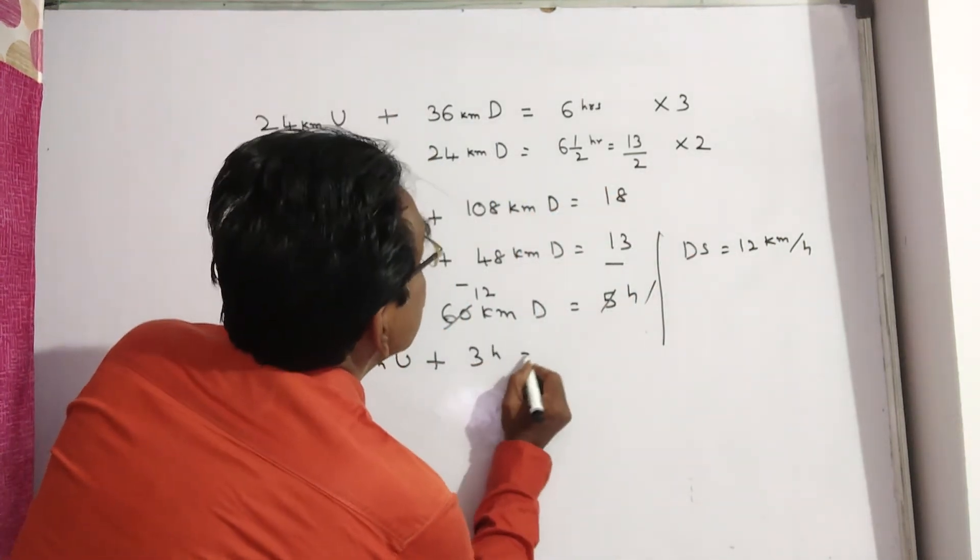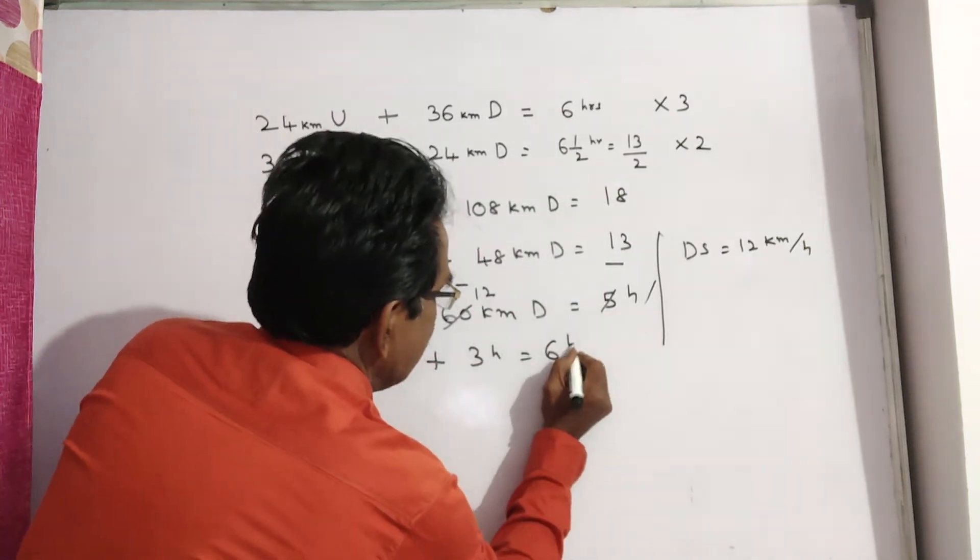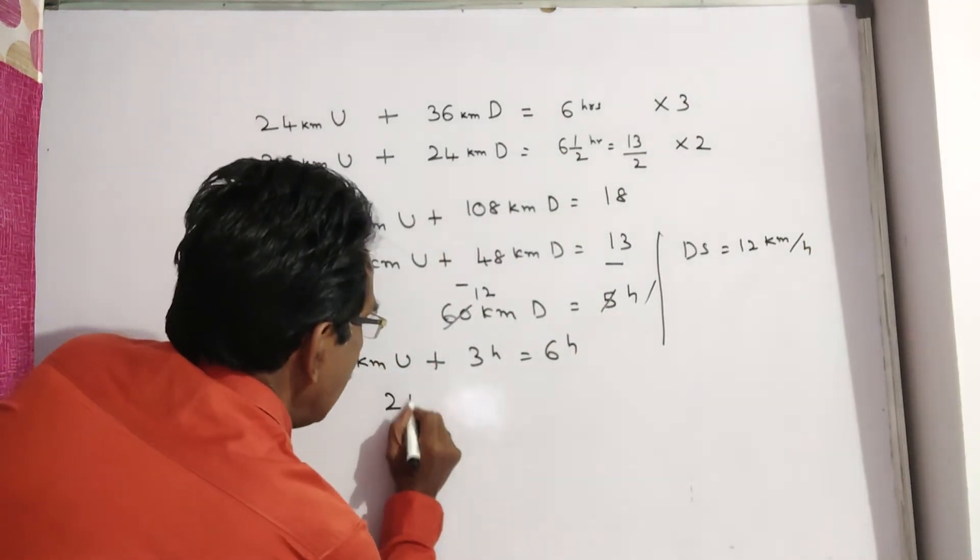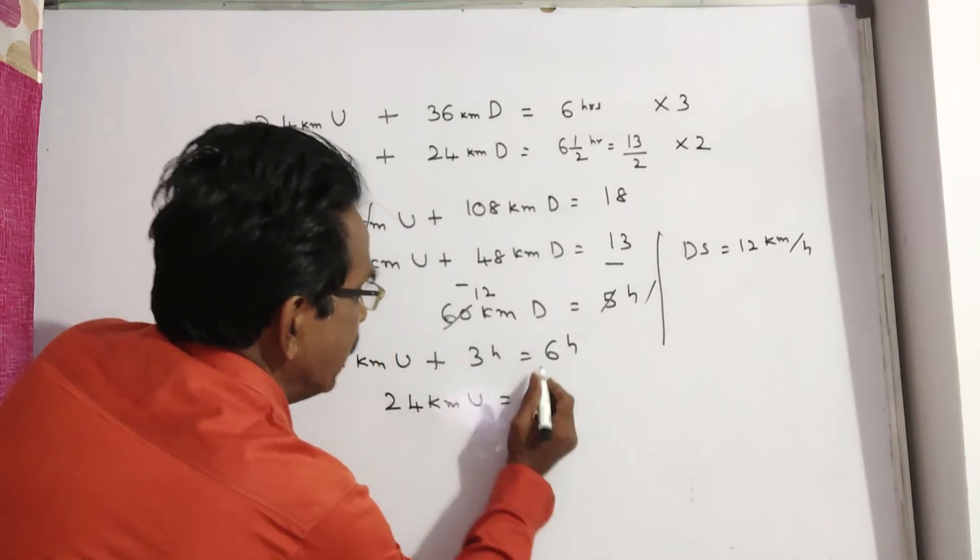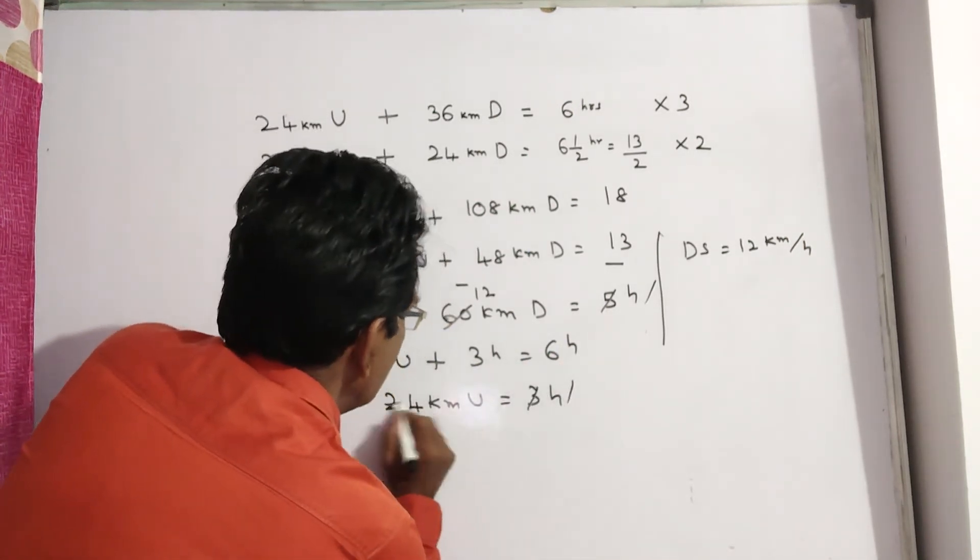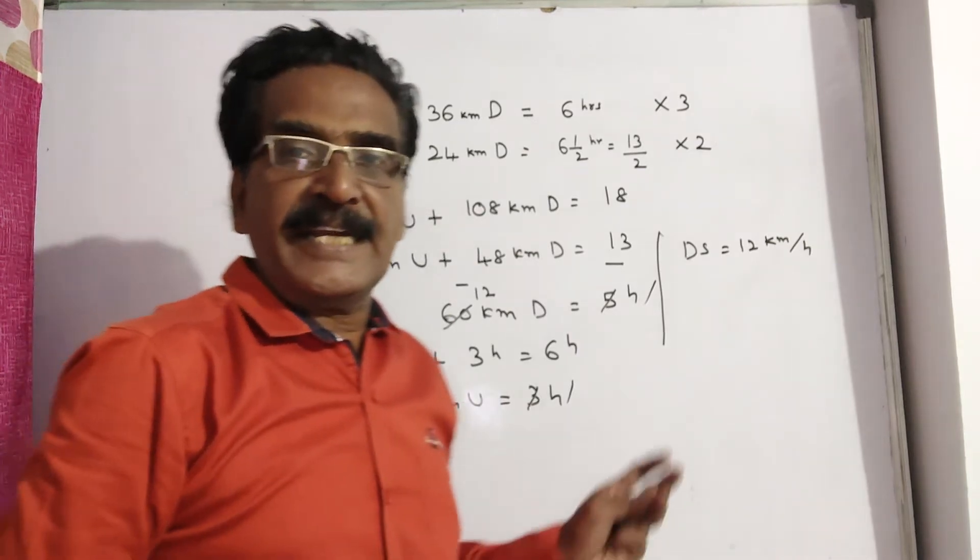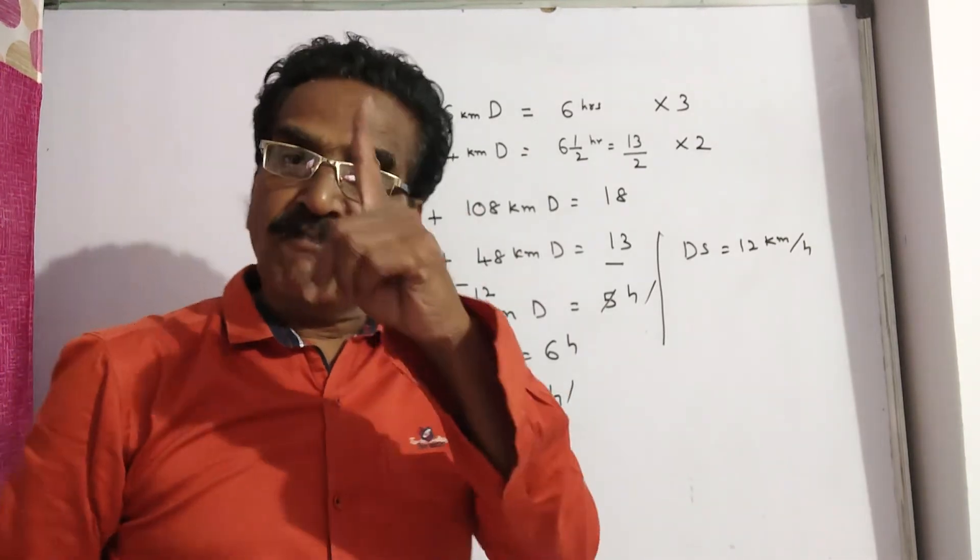Plus 3 hours equals 6 hours. It means to travel 24 kilometers upstream takes 6 minus 3, 3 hours. 24 divided by 3 is 8, so 8 kilometers upstream in 1 hour.